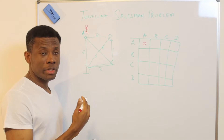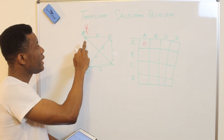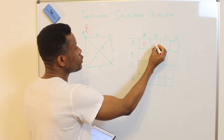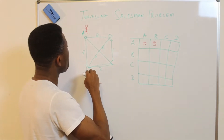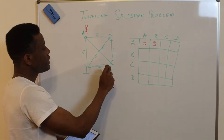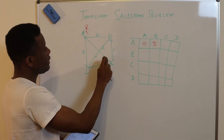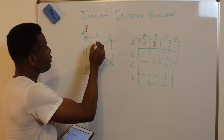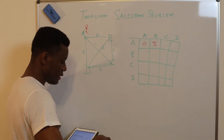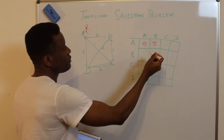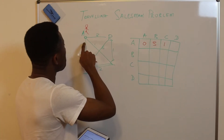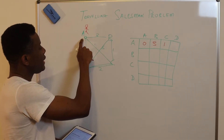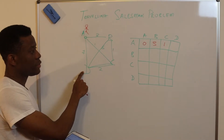From A to B is three. From A to C is one. And from A to D is seven, as you can see in the matrix.